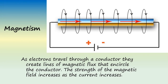As electrons travel through a conductor, they create lines of magnetic flux that encircle the conductor. The strength of the magnetic field increases as the current increases. This picture illustrates current flowing through a conducting wire depicted by the red arrows. Though in class we will usually indicate current flowing from negative to positive, this picture uses the conventional flow theory, but it makes no difference for the purposes here. We can see here the lines of magnetic flux encircling the conducting wire.